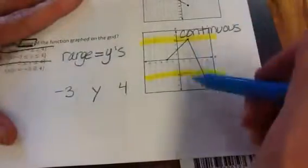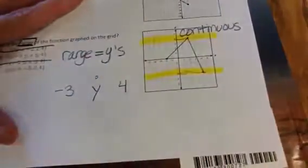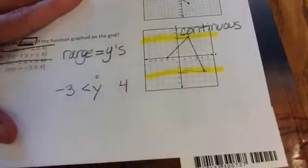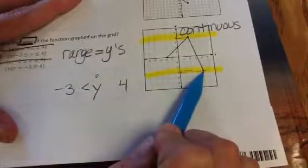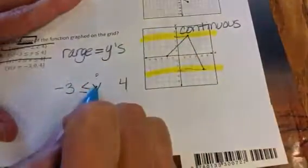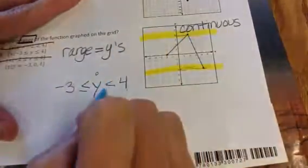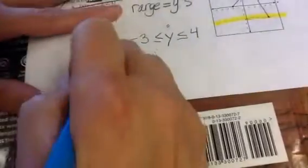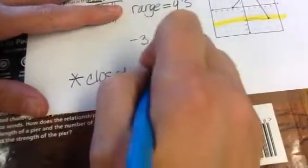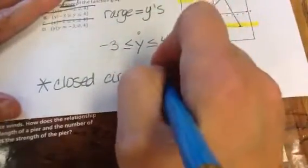Pick a number between negative 3 and 4 — I'll pick 0. Is negative 3 less than 0? Yes, less than. That circle at negative 3 was closed, so it's 'less than or equal to.' Is 0 less than 4? Yes. That circle at 4 is also closed, so it's 'or equal to' as well. Note: a closed circle means less than or equal to, or greater than or equal to. An open circle means just less than or greater than — no 'or equal to.'